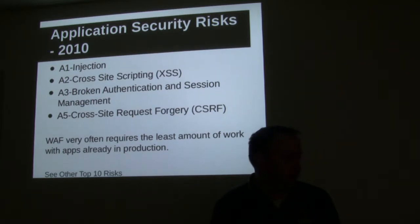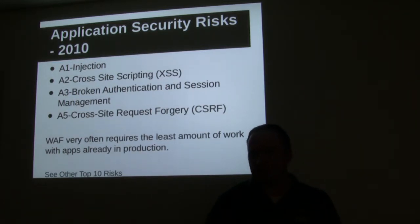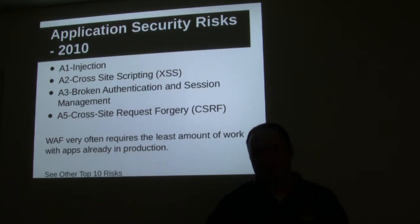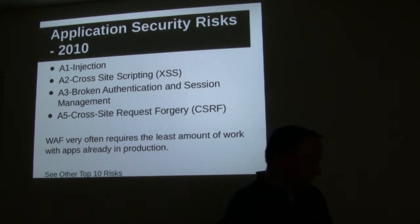Number three was broken authentication and session management. Number five, which FuseGuard protects against, is cross-site request forgery — where a hacker puts a form or image on another website. For example, if it was Facebook, you might be logged in all the time. They might have an image that, when you visit their website, loads and calls Facebook, maybe liking their page because it thinks you're authenticated. That's cross-site request forgery. These require the least amount of work with apps already in production.